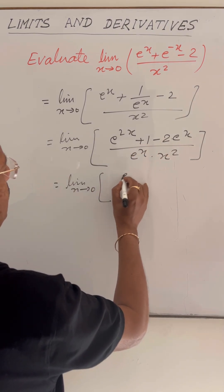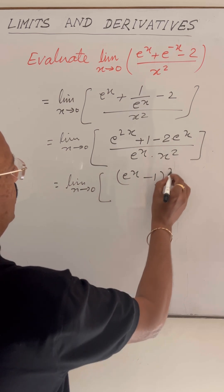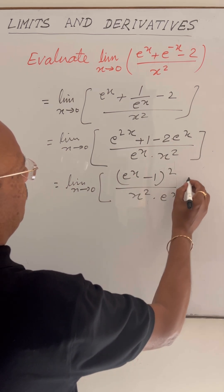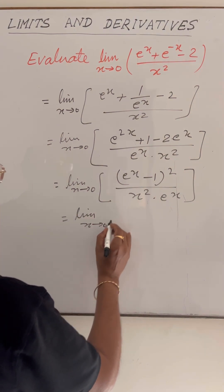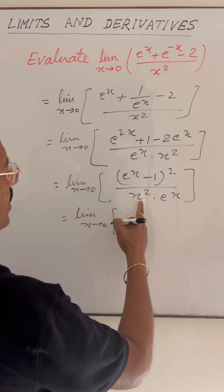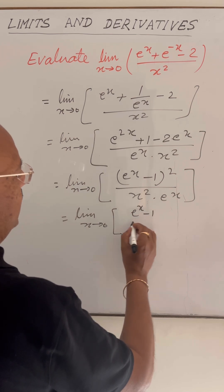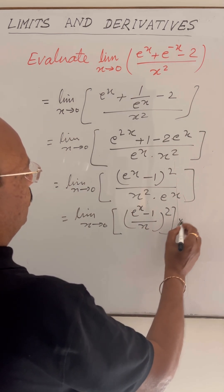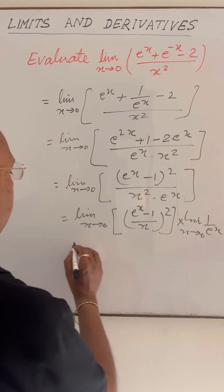The numerator can be written as (e to the power x minus 1) whole square, upon x squared into e to the power x. Then (e to the power x minus 1) whole square by x squared can be written as (e to the power x minus 1 by x) whole square, into limit x tends to 0 of 1 by e to the power x.